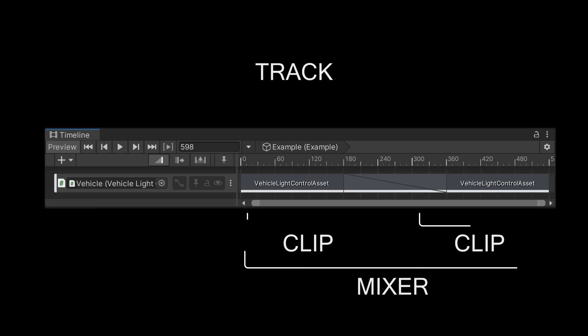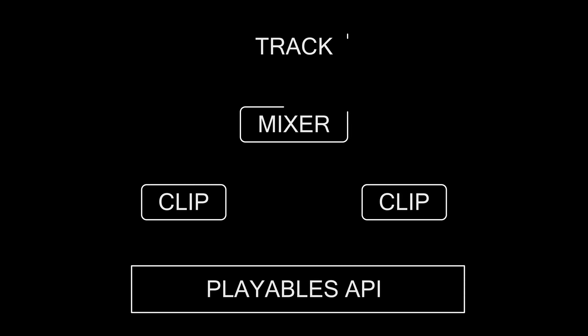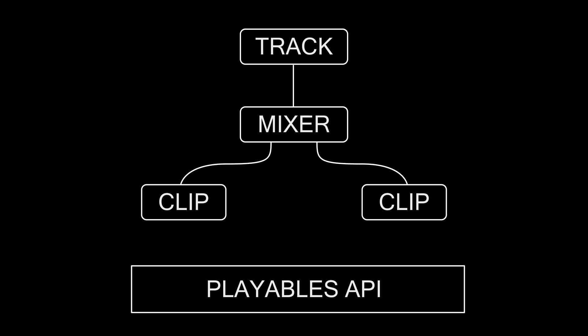This component is called a mixer. One important thing to mention is that the timeline is built on top of the Playables API. This means that the clips, the mixer, and the track actually form a graph under the hood. The clips send data based on their influence to a mixer that blends it into a final result and sends it up the graph to the timeline.